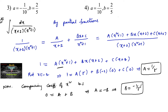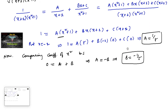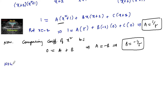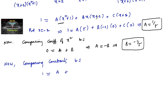So A = 1/5 and B = −1/5. Now let us find C by comparing constants on both sides. We get 1 = A·1 + C·2, so 2C = 1 − A = 1 − 1/5 = 4/5. Therefore C = (4/5)/2 = 2/5.